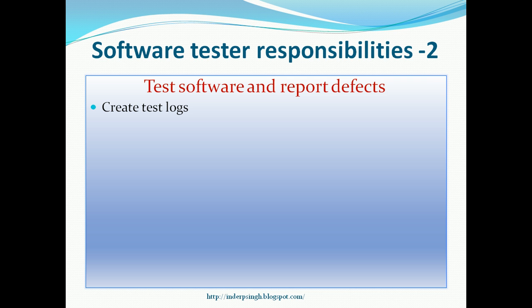Another responsibility is to create test logs — keeping track of what testing has been done so far in order to stay on schedule. The tester may also be required to report test results to stakeholders. This reporting may be formal, meaning a documented report sent to the project manager, developers, and test manager, or it may be informal, such as during a stand-up meeting. The tester has to communicate the status of overall testing and how the system is looking with respect to quality.